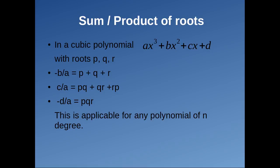Sum and product of roots. In the given cubic polynomial Ax³ plus Bx² plus Cx plus D, suppose the roots are P, Q, and R. The sum of the roots taken one at a time is the negative of the coefficient of x² by the coefficient of x³, which is minus B by A. The sum of the roots taken two at a time is the coefficient of x by the coefficient of x³, which is C by A. The product of the roots is the negative of the constant term by the coefficient of x³, which is minus D by A.